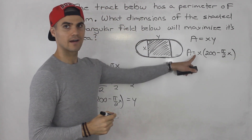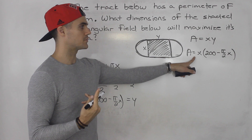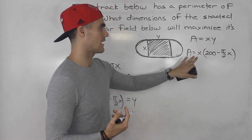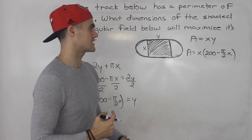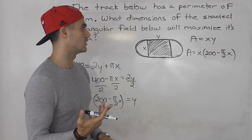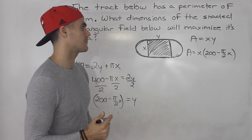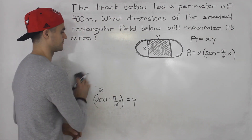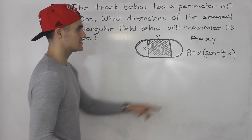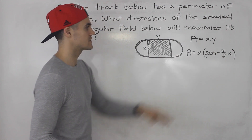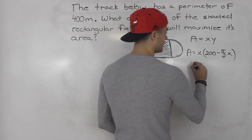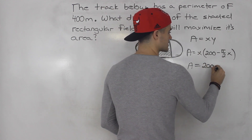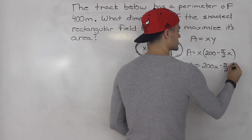So we can isolate for either y or x and then plug it in there. I'm going to choose to isolate for y, so I'll bring the πx over: 400 minus πx is equal to 2y. Then I can divide everything by 2 to get y by itself. So we'll have y is equal to 200 minus (π/2)x. Now this π/2 is just like a constant in front of the x. So now I could take this expression and plug it in for y. So area equals x times (200 minus (π/2)x). Now notice that we have an area function in terms of one variable — it's all in terms of x.